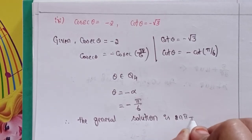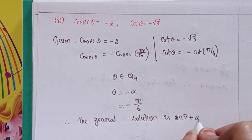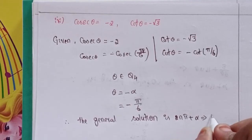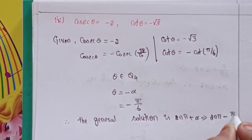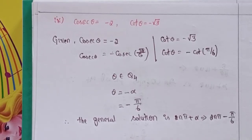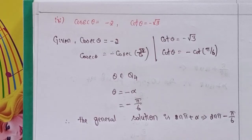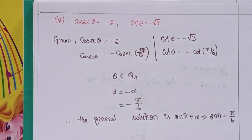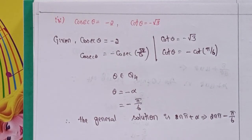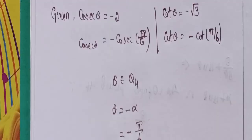Therefore the general solution is 2nπ + α, that means 2nπ minus π/6. This is the solution for question number 3. In the next class we will discuss question number 4. Thank you for watching my video, take care!